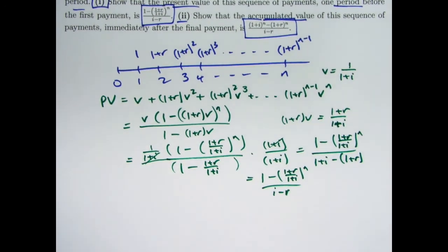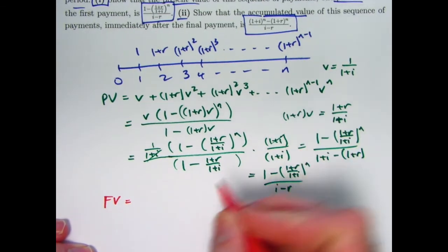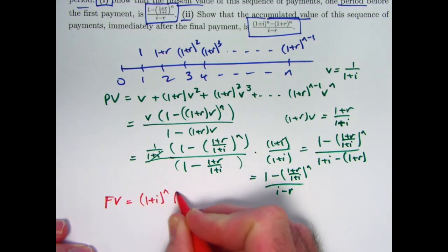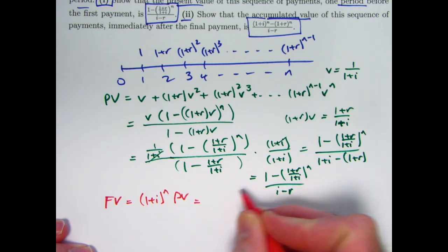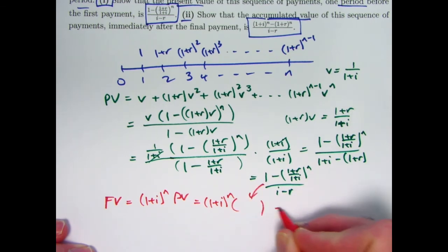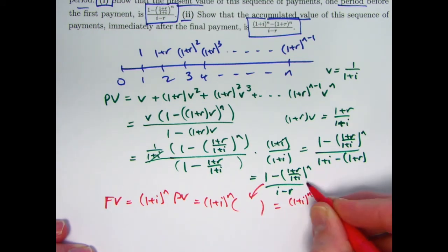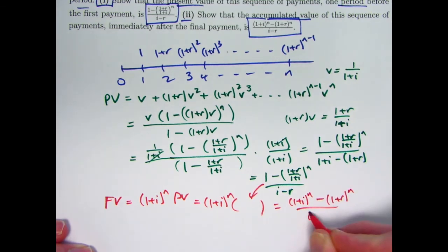What about the future value? The quick way is to say the future value at time n, immediately after the last payment, equals (1 plus i) to the n times the present value. Multiplying (1 plus i) to the n through the numerator, it cancels with the (1 plus i) to the n in that term, and I'm left with (1 plus r) to the n over i minus r.